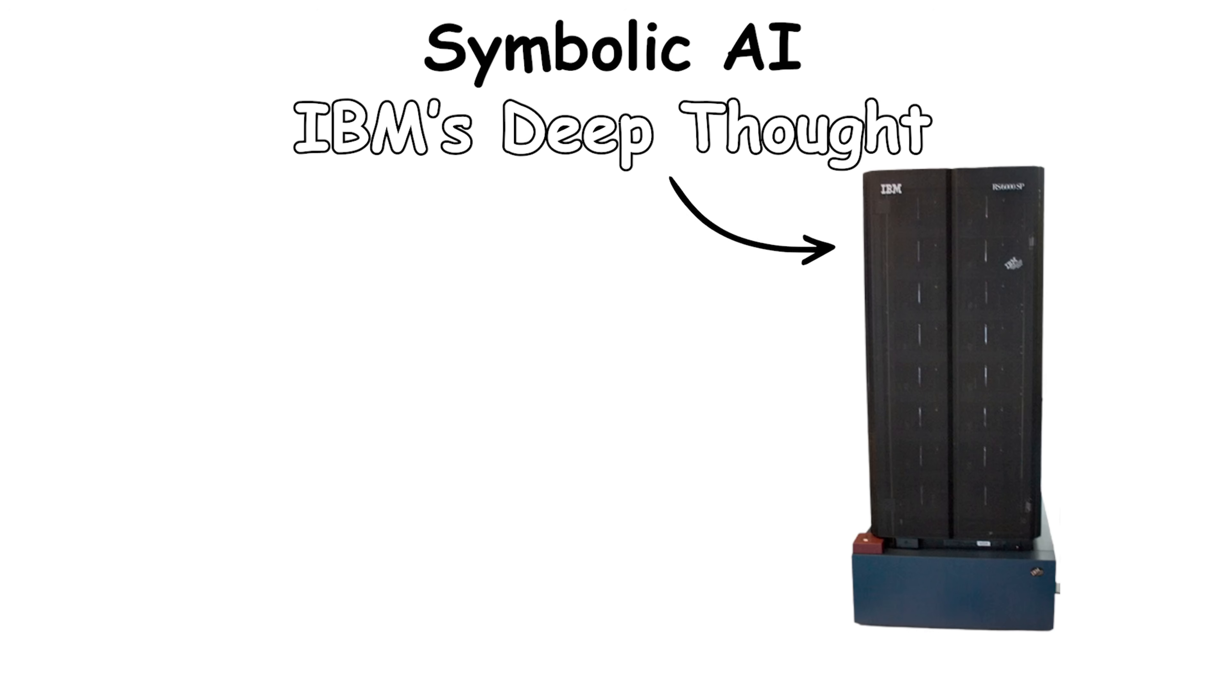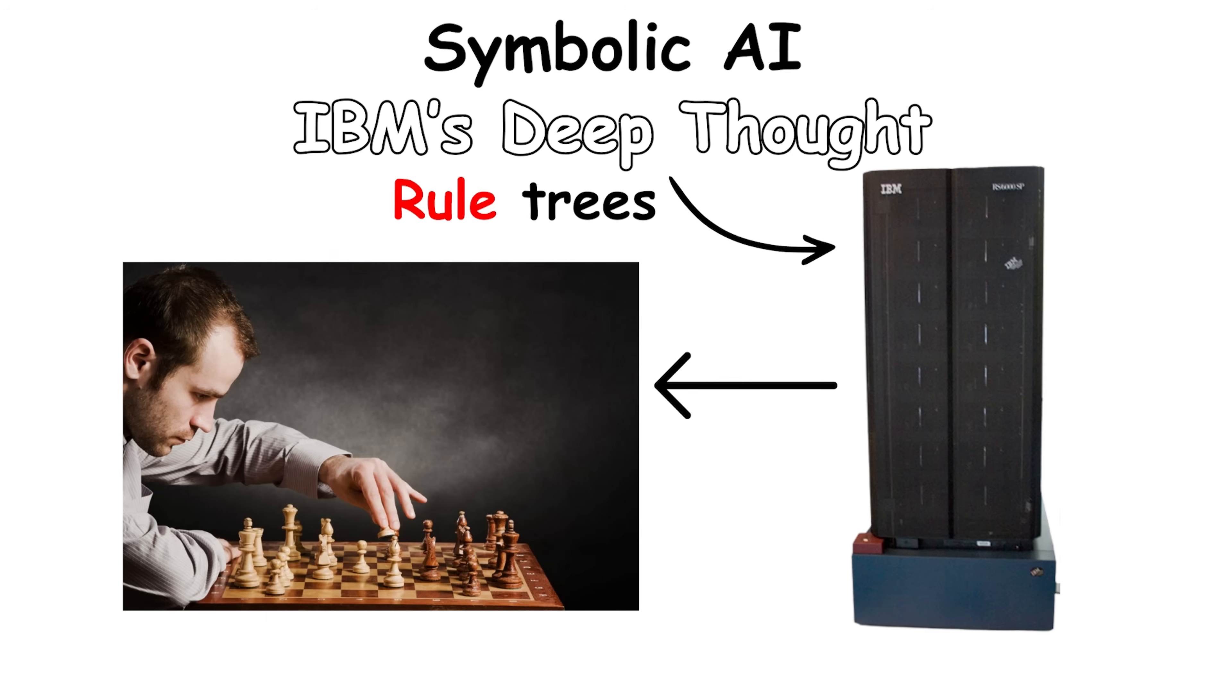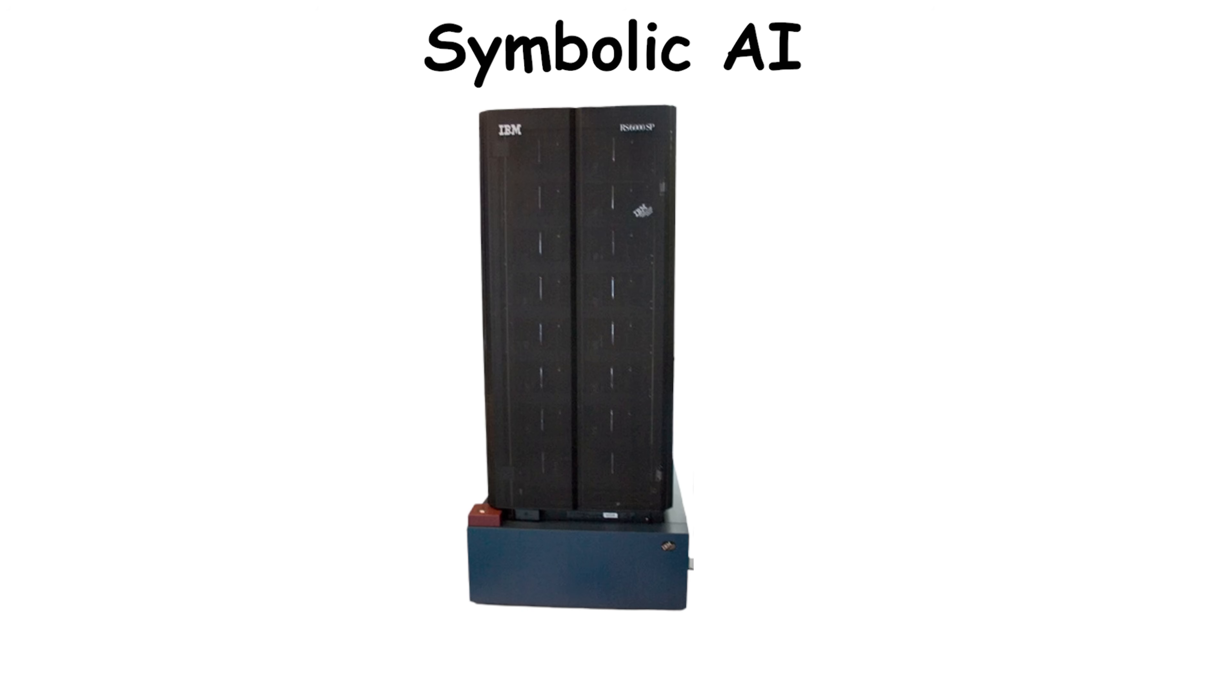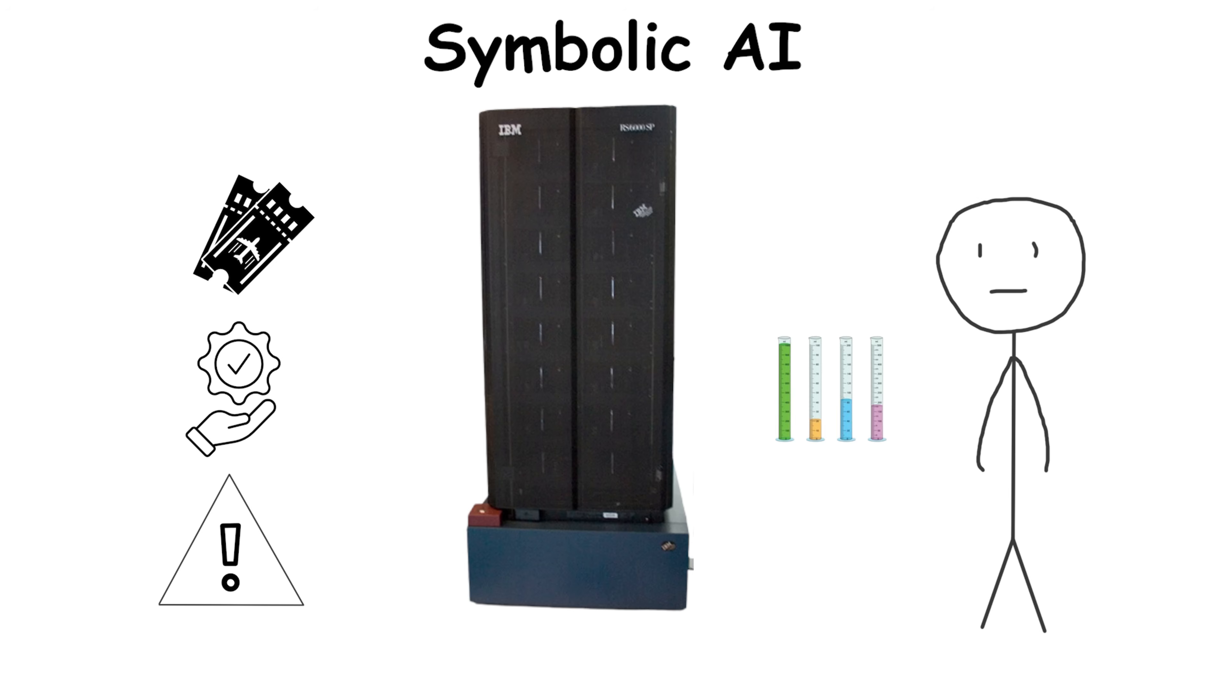Chess programs like IBM's Deep Thought could crush casual players using rule trees, calculating positions humans couldn't track. It automated tax software, airline booking, and factory-quality checks, catching errors no human could spot at scale.